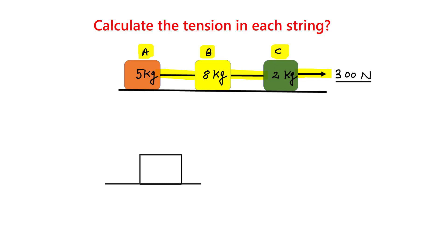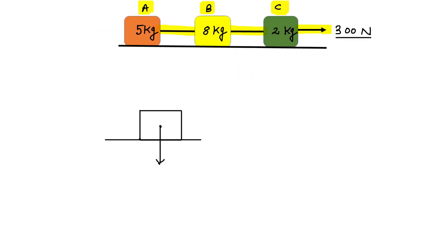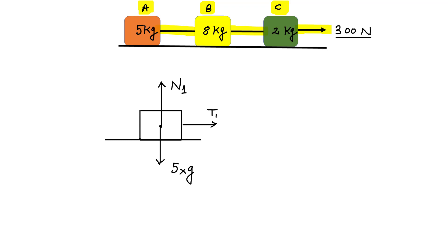What are the forces acting on block A? One force is its weight, which is Mg — in this case that is 5 times g, and g is 10 m/s². There will be a normal reaction because the ground pushes the block up. Let us call this normal reaction N1. And this string will try to pull — let us call this tension T1.